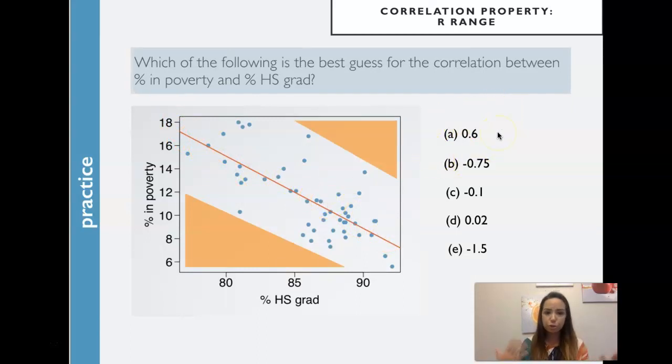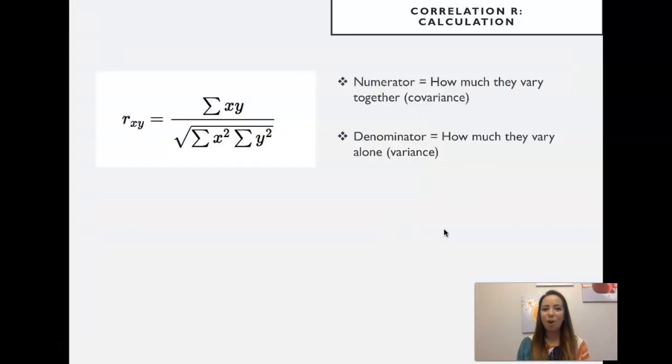For sure, if I'm looking at a cloud of data like this, I don't know exactly what R is. I know that it will be potentially somewhere between 0.6 and 0.8 looking at this graph, but we don't need to guess. I like to train my eyes a little bit when I'm looking at these plots, but we can actually compute R.